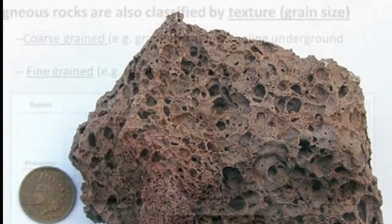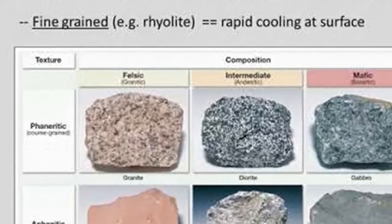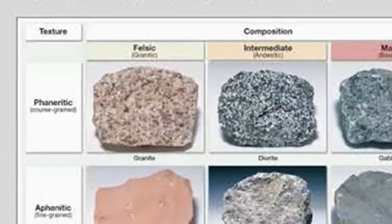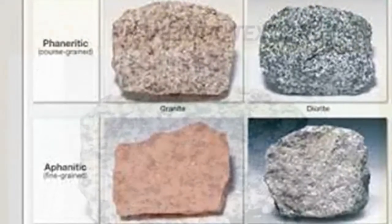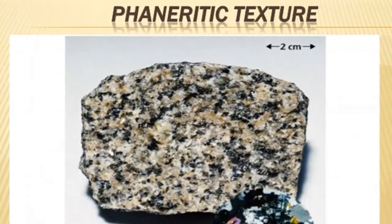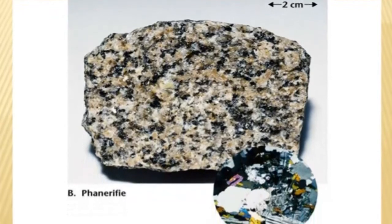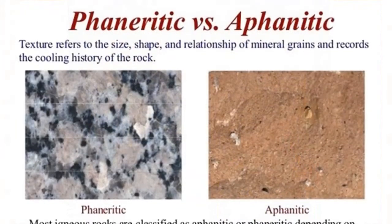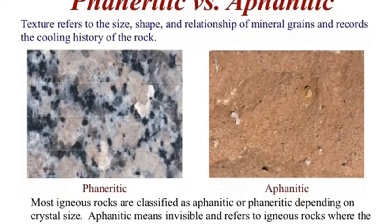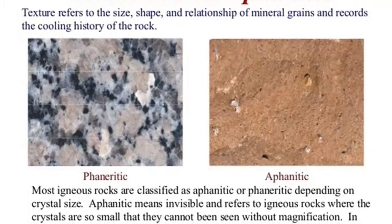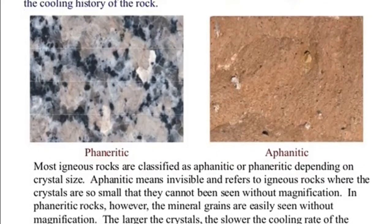Phaneritic texture is coarse-grained. When large masses of magma slowly solidify far below the surface, they form igneous rocks that exhibit a coarse-grained texture described as phaneritic. These coarse-grained rocks consist of massive intergrown crystals, which are roughly equal in size and large enough so that individual minerals can be identified without a microscope. Geologists often use a small magnifying lens to aid in identifying coarse-grained minerals. Because phaneritic rocks form deep within the Earth's crust, their exposure at Earth's surface results only after erosion removes the overlying rocks that once surrounded the magma chamber.